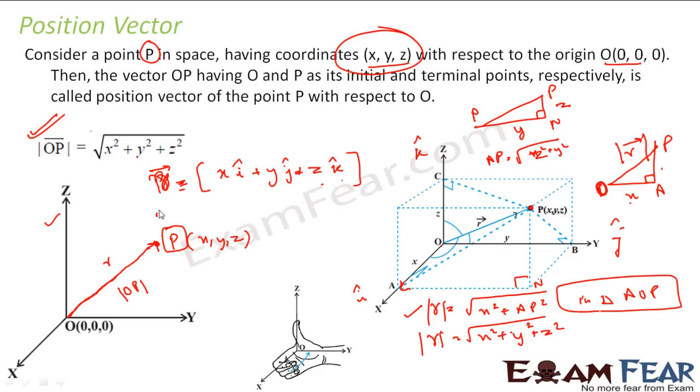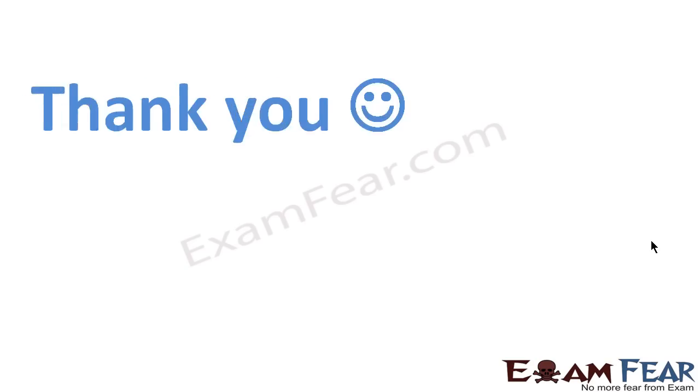So I can write this R vector as xi plus yj plus zk. And the magnitude of this R vector will be nothing but root of x square plus y square plus z square. Thank you.